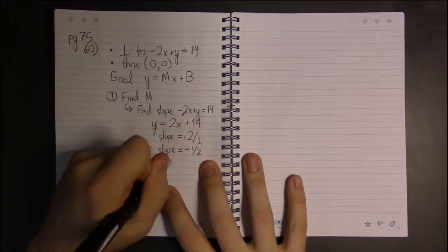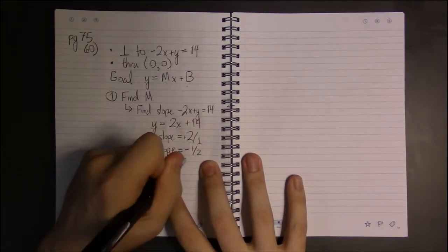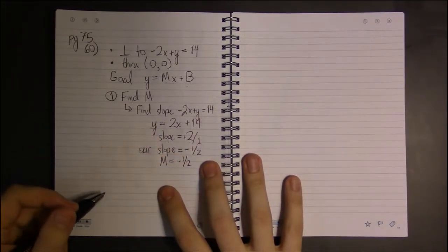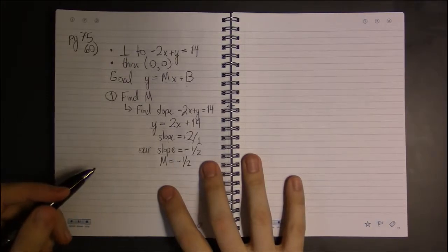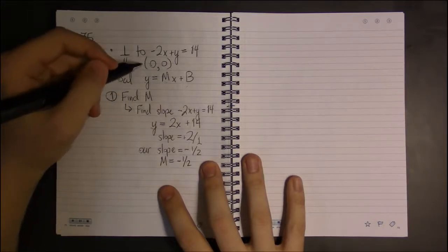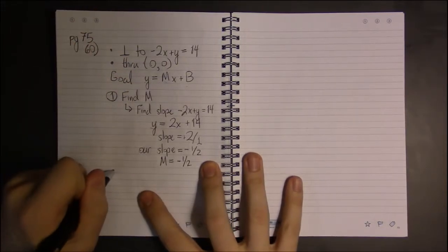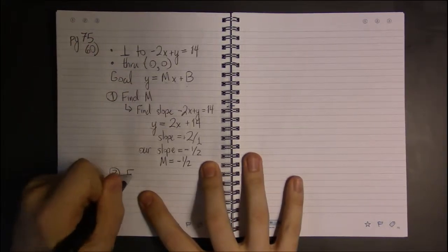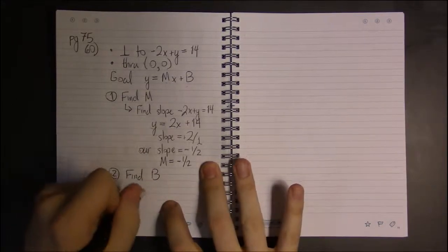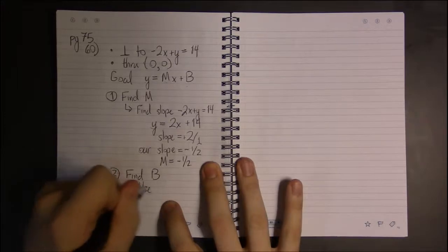So for us, m is -1/2. And now we've got the slope, and now it's back to normal because we have a slope and a point. So to find b, we can use the point (0, 0).